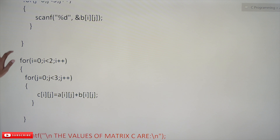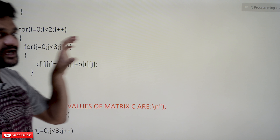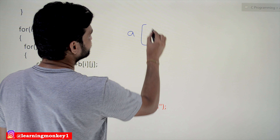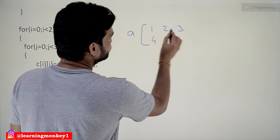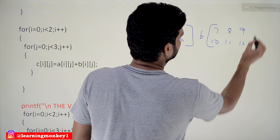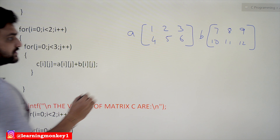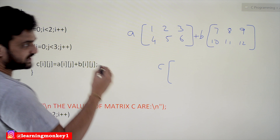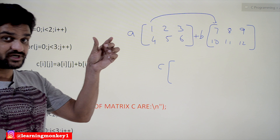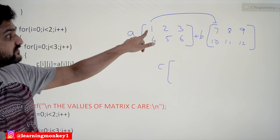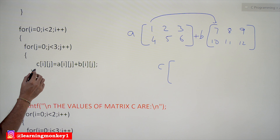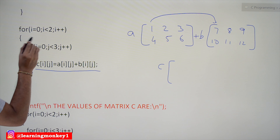In the next for loop, the actual addition of the matrices is done. The values in matrix A are 1, 2, 3, 4, 5, 6, and the values in matrix B are 7, 8, 9, 10, 11, 12. We compute A+B: the [0][0] index of A gets added with the [0][0] index of B, and the result is stored at index [0][0] of C.